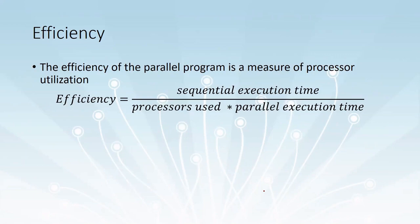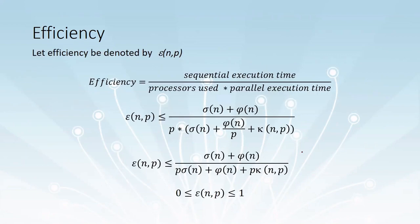The efficiency of a parallel program is a measure of processor utilization. It is given as sequential execution time divided by the number of processors used times the parallel execution time. Denoted epsilon of n, p, the sequential execution time is sigma of n plus phi of n, and the parallel execution time is sigma of n plus phi of n divided by p, plus kappa of n, p.